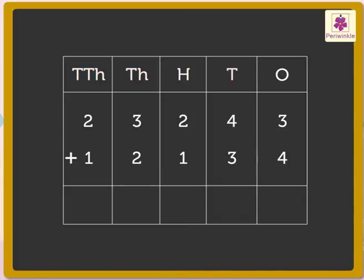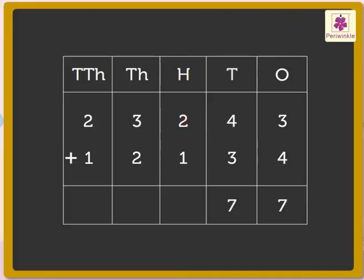First, we add the numbers in the ones column: 3 and 4. We get the number 7. Write it in the ones column. Next, add the numbers in the tens column: 4 and 3. We get 7, which we write in the tens column. Further, add the numbers in the hundreds column: 2 and 1. We get 3, which we write in the hundreds column.